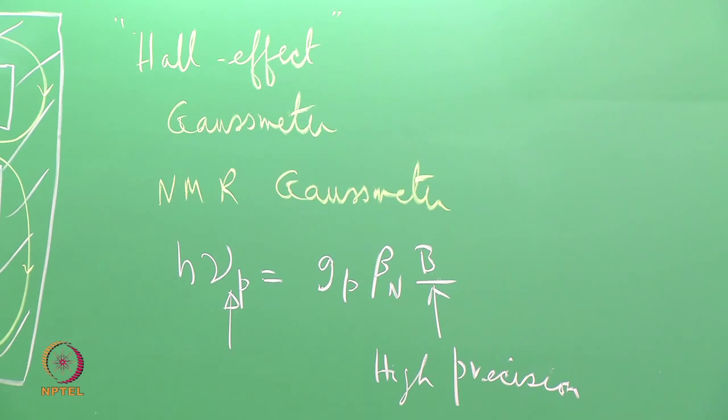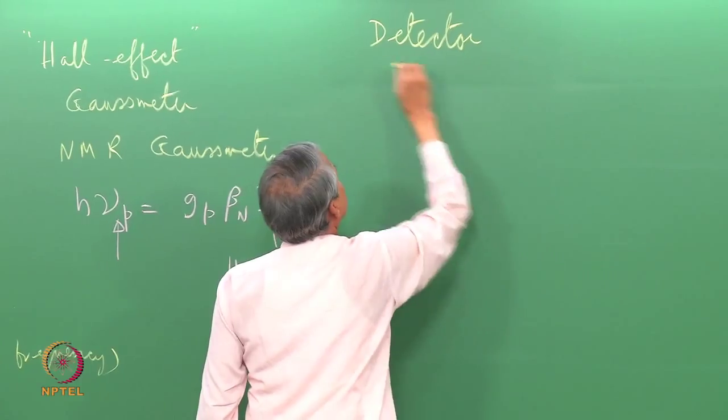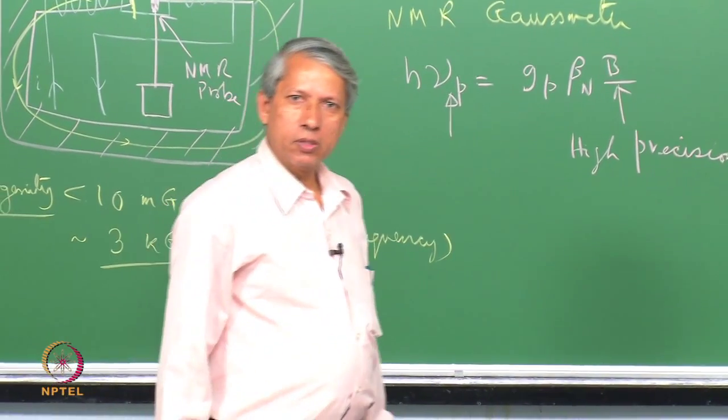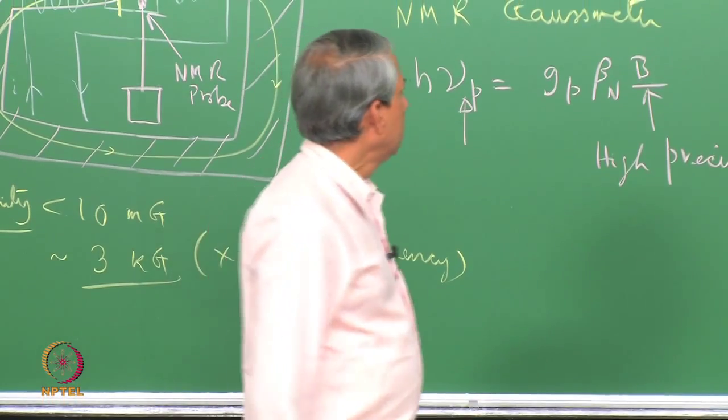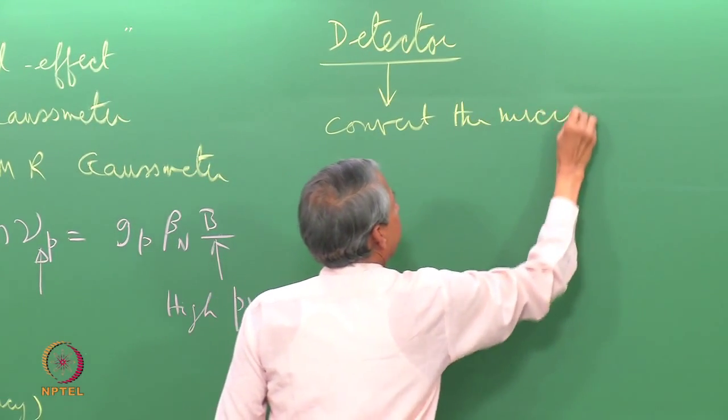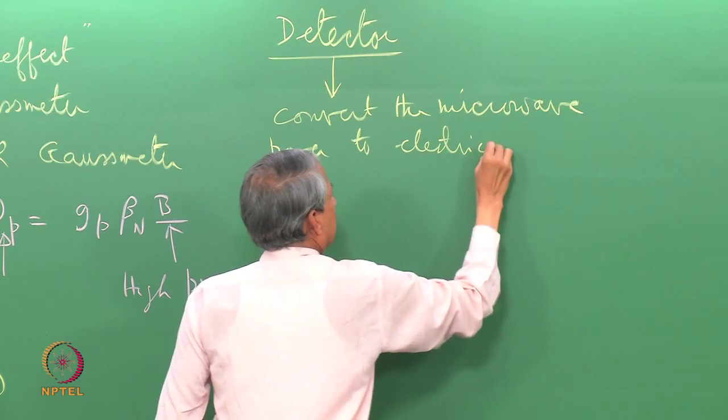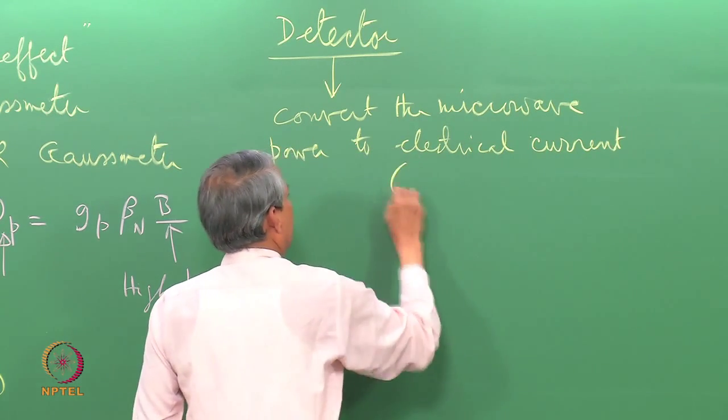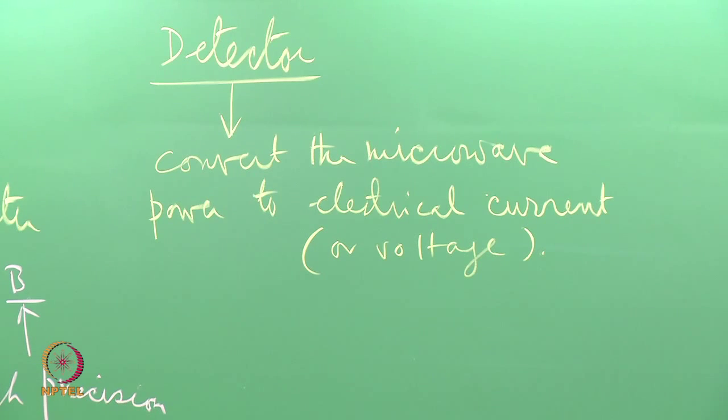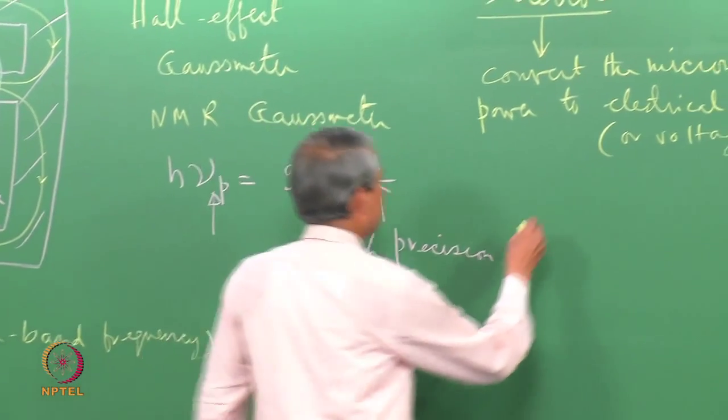The next important component of the spectrometer is of course the detector. The detector's job is to measure the microwave power that is coming out of the cavity, which will carry the information about the absorption of microwave by the sample. What it does is convert the microwave power to electrical current or voltage, so that it can be further amplified and recorded.